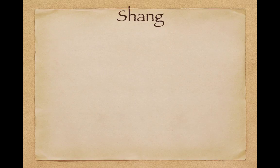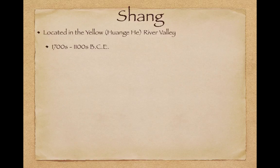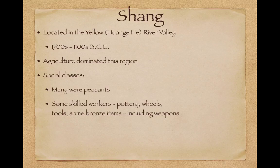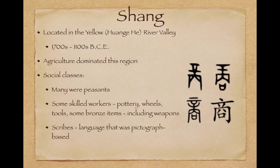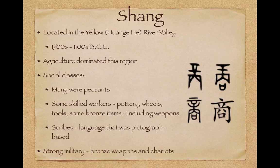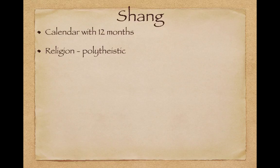The Shang is located in the Yellow River Valley of present-day China, from the 1700s to 1100 BCE. Agriculture dominated this region. There were social classes — many people were peasants, with some skilled workers in pottery and tool-making. Bronze items including weapons were much stronger than other weapons of the time. The language was pictograph-based, and scribes played an instrumental role in recording data. The Shang also had a strong military with bronze weapons and chariots.